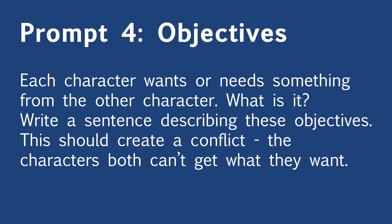Next, think about the characters' objectives and the conflict between them. Each character wants or needs something from the other character, and those objectives should create a conflict — the characters can't both get what they want. Remember that every objective should be immediate, important, specific, and have consequences. Write a sentence for each character describing their objective and why they need or want it. Each character should have their own objective.